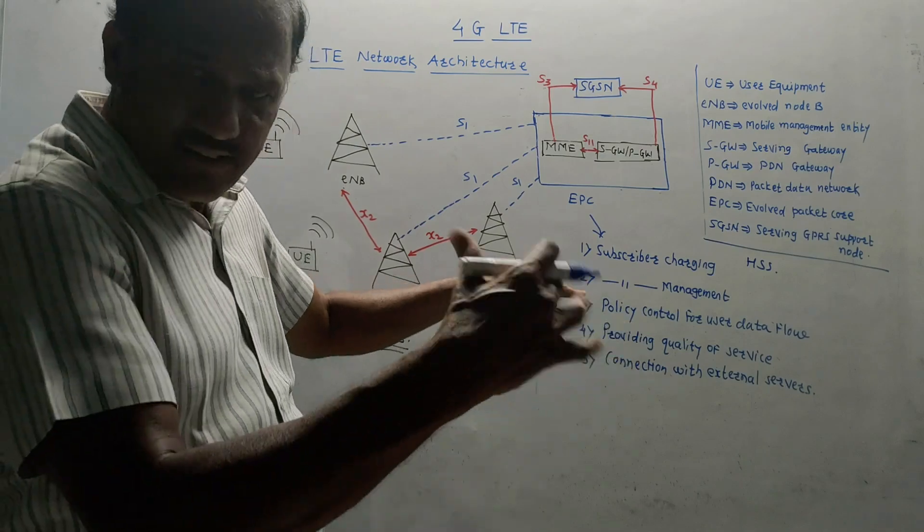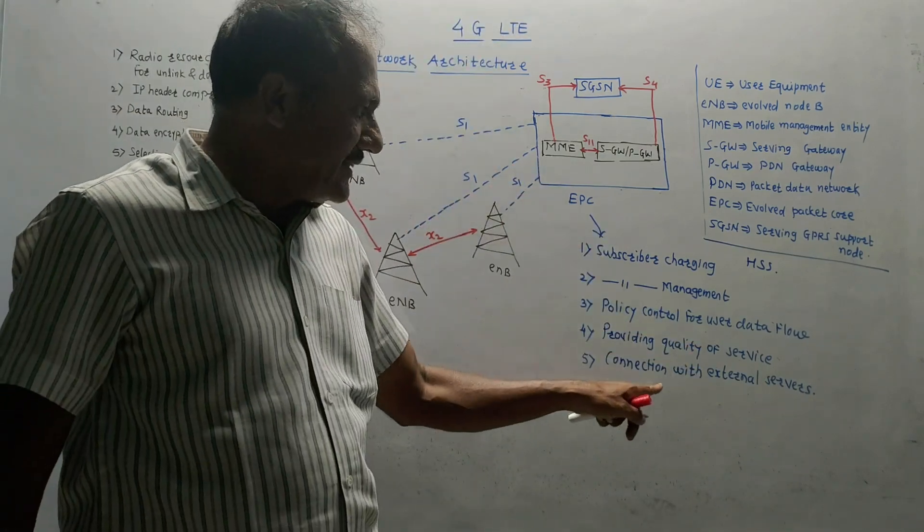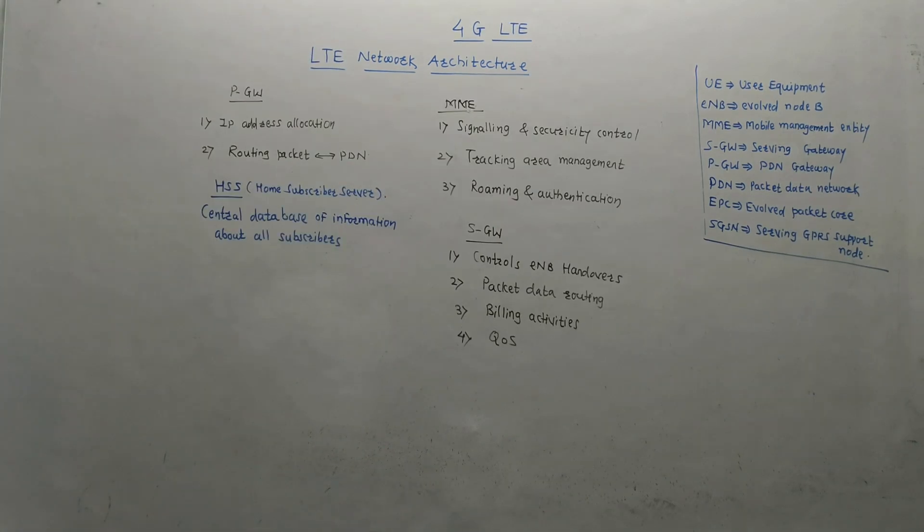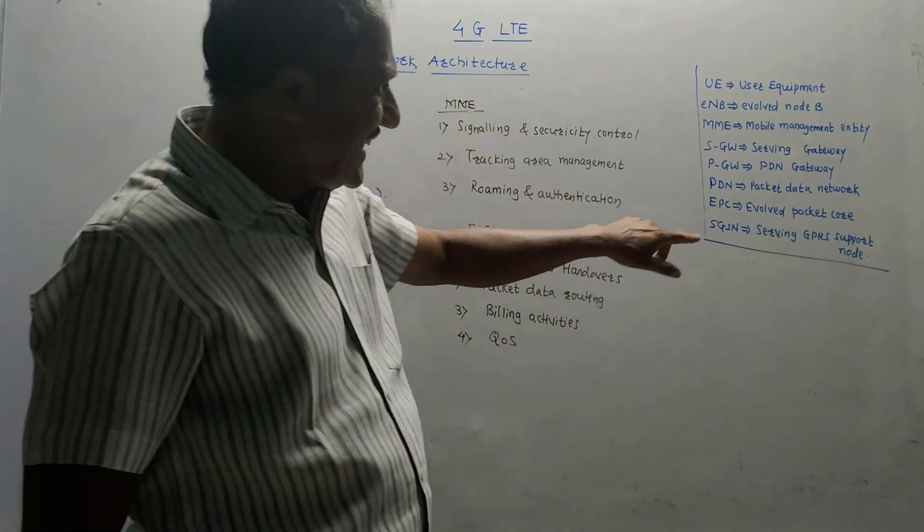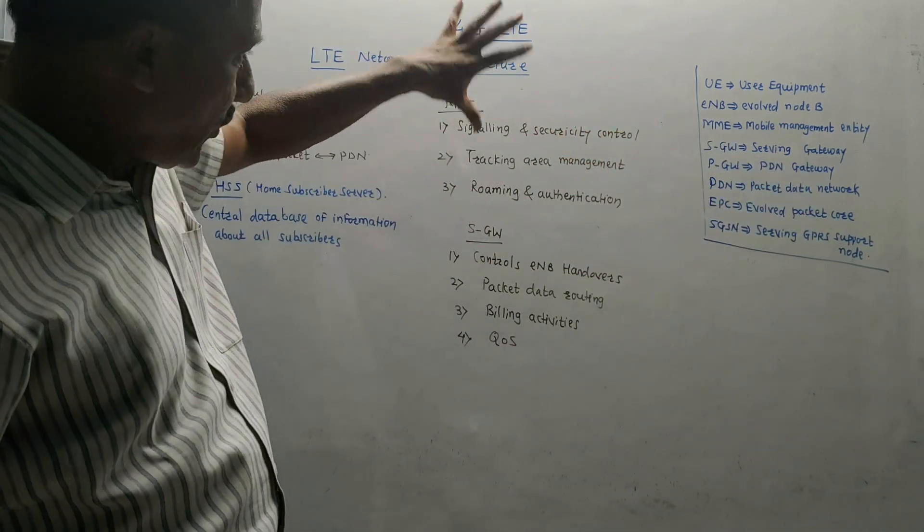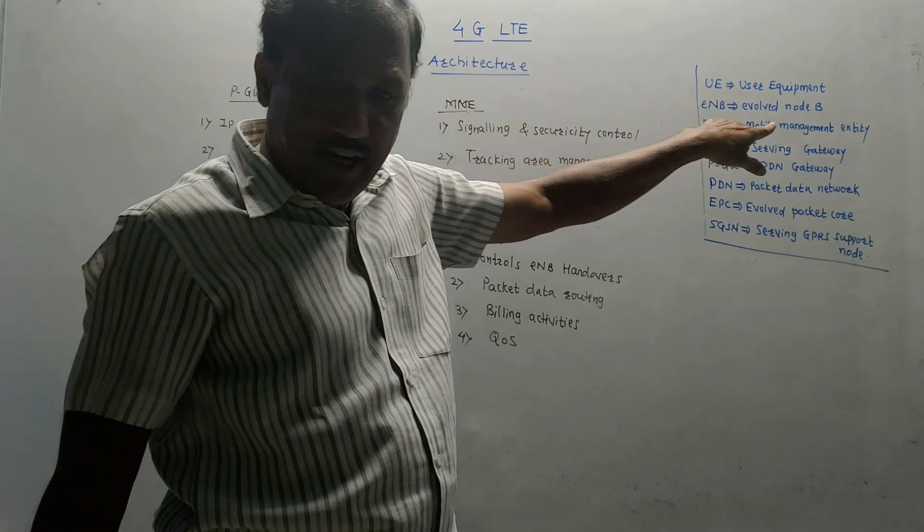It basically helps to control the data flow. Now I have listed out some important points related to all blocks which are inside the EPC, evolved packet core. First block is MME, that is mobile management entity.